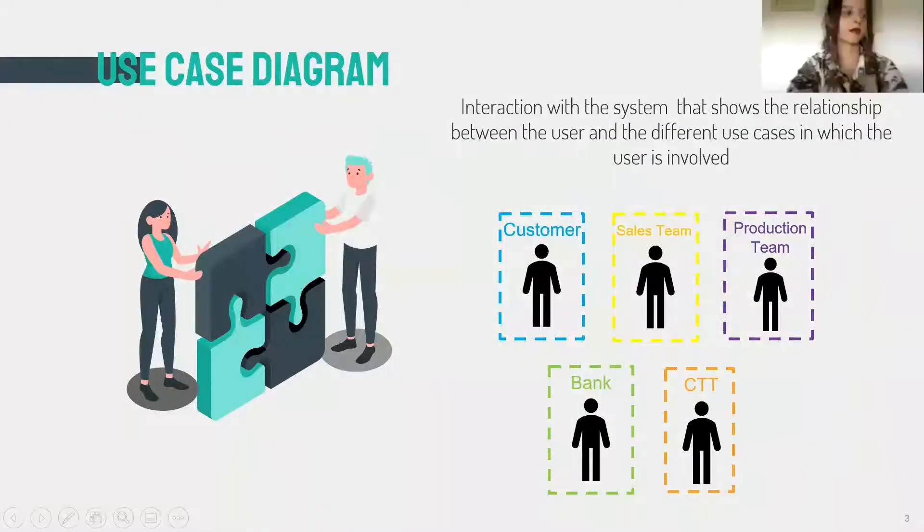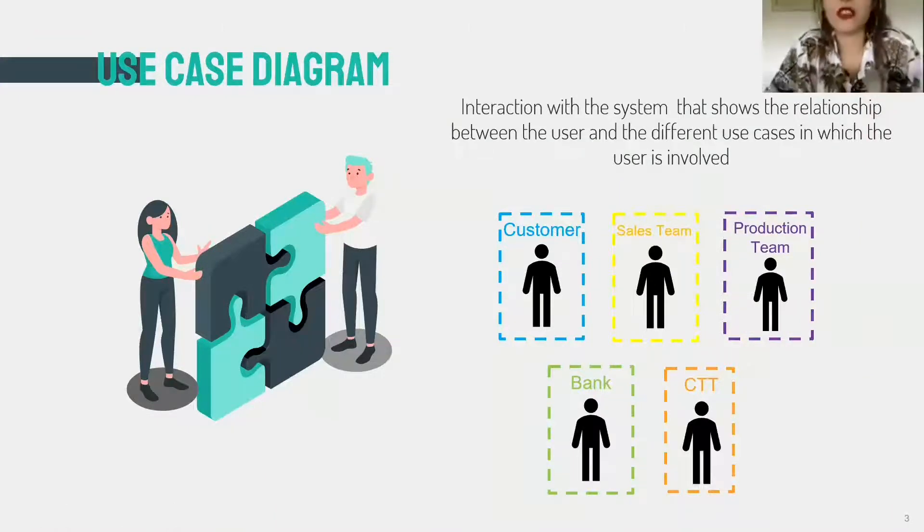A use case diagram at its simplest is a representation of a user's interaction with the system that shows the relationship between the user and the different use cases in which the user is involved. It represents a very suitable tool for the description of the system, making use of the identification and specification of system requirements.